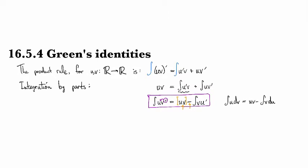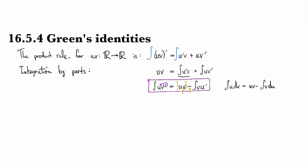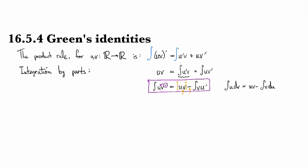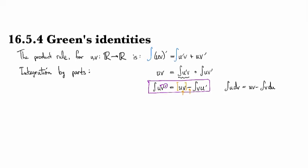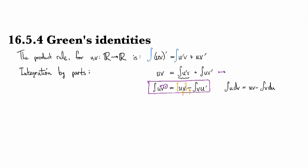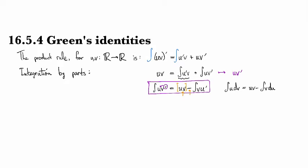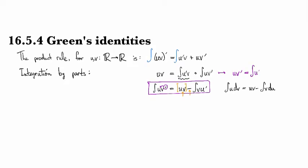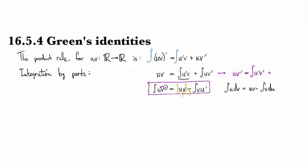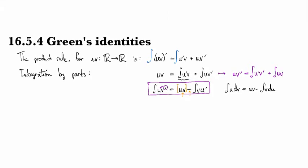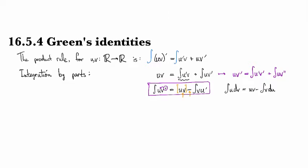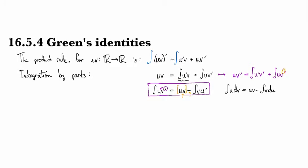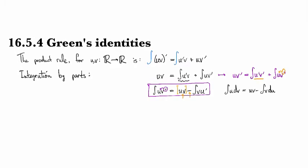So Green's identity is an analog of this idea. But it's the case when we already have differentiated v once. So this would look like u v prime is equal to u prime v prime plus integral u v double prime. And so we want to take one of these derivatives from the v and move it onto the u so that we get this form here.